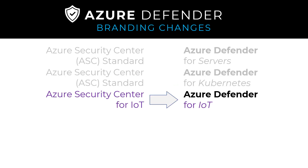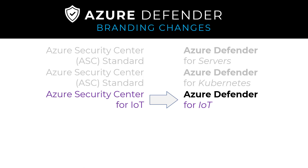That function has been broken out into its own distinct product — there's quite a growing bit of functionality there, so it makes sense. Then Azure Security Center for IoT is now Azure Defender for IoT. And Advanced Threat Protection for SQL is now Azure Defender for SQL.